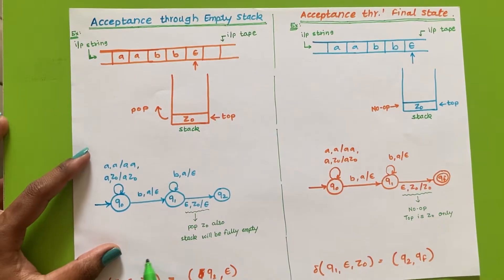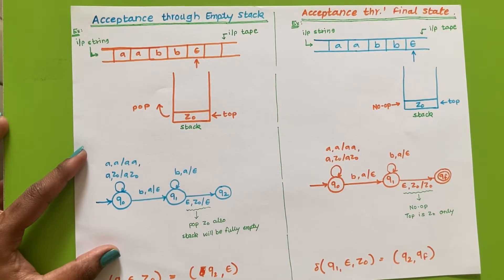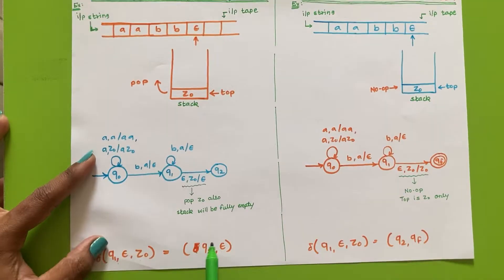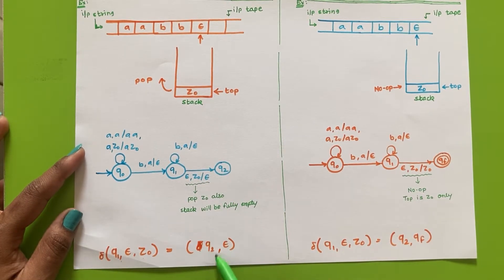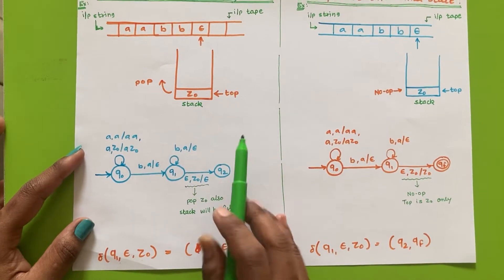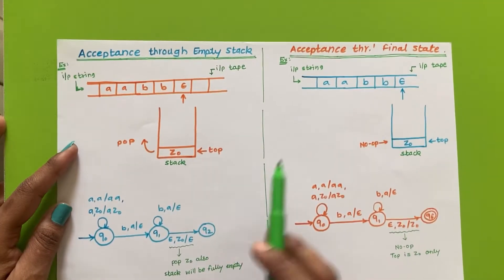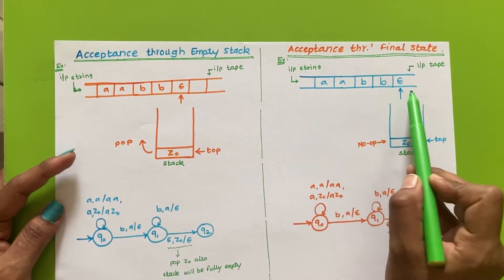In case of acceptance through empty stack, this transition will be represented as: delta of q0, empty comma Z0, is equal to q2 comma empty. Here q2 is not a final state — it can be any intermediate state — and this transition will perform a pop operation on the stack.